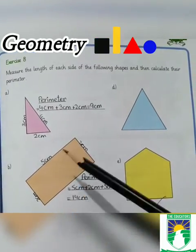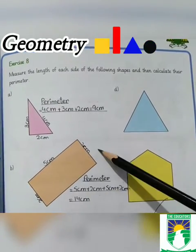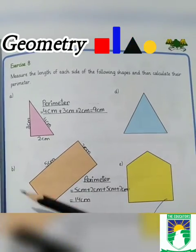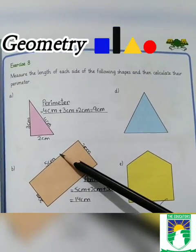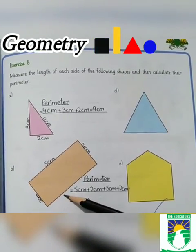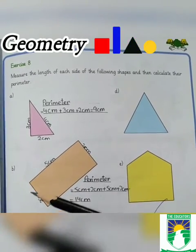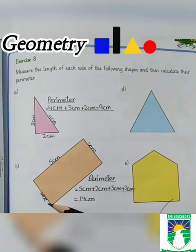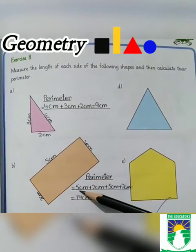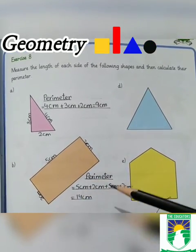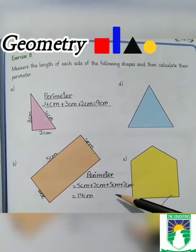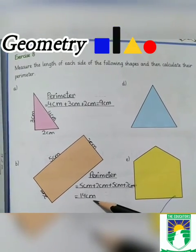Question number B: There are 4 sides of this shape. You have to measure with the scale. This side is 5 centimeters, so this opposite side will be 5 centimeters. This side is 2 centimeters, so this side will be 2 centimeters. Perimeter is equal to 5 centimeters plus 2 centimeters plus 2 centimeters plus 5 centimeters, which equals 14 centimeters.